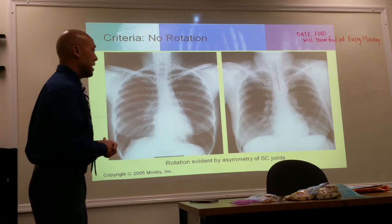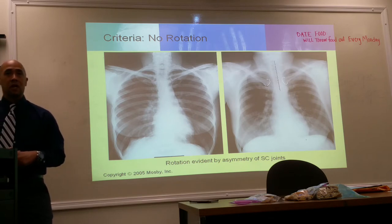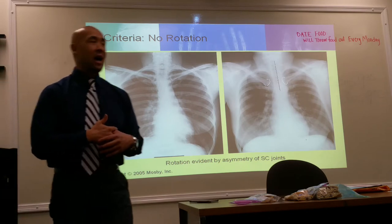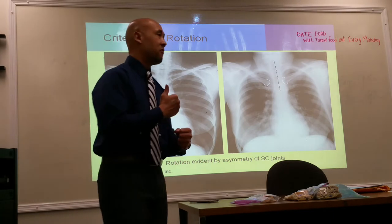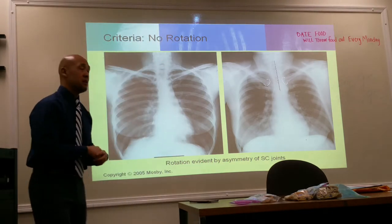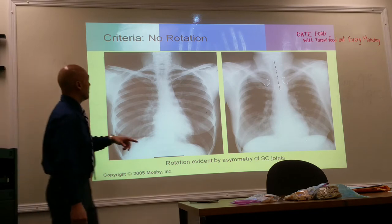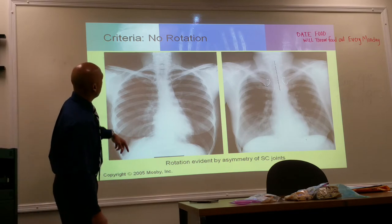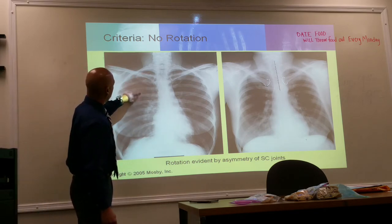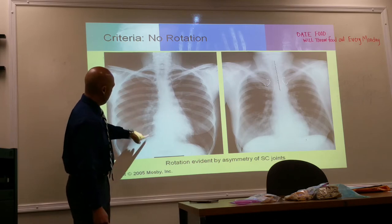For a properly inflated chest x-ray, you need good inspiration on a second breath. You should see ten sets of posterior ribs. Let's count them: one, two, three, four, five, six, seven, eight, nine, ten. A properly inflated chest x-ray should demonstrate at least ten posterior ribs.